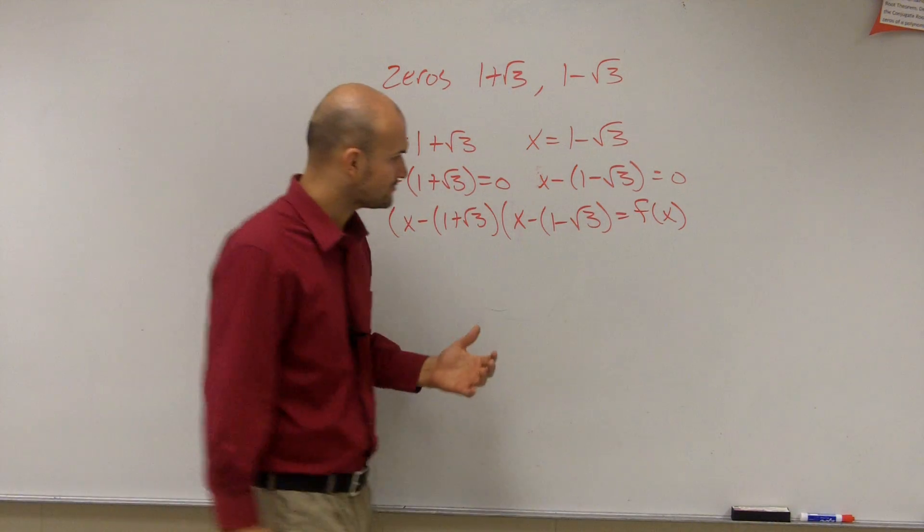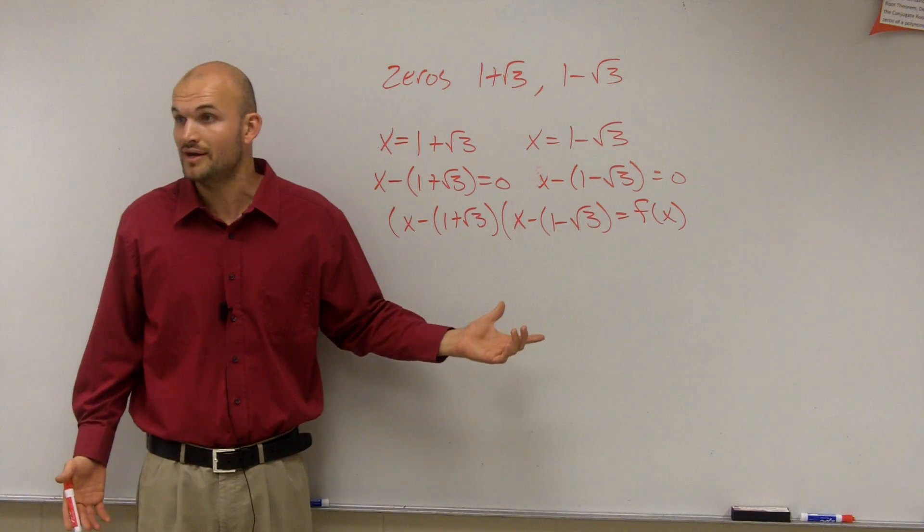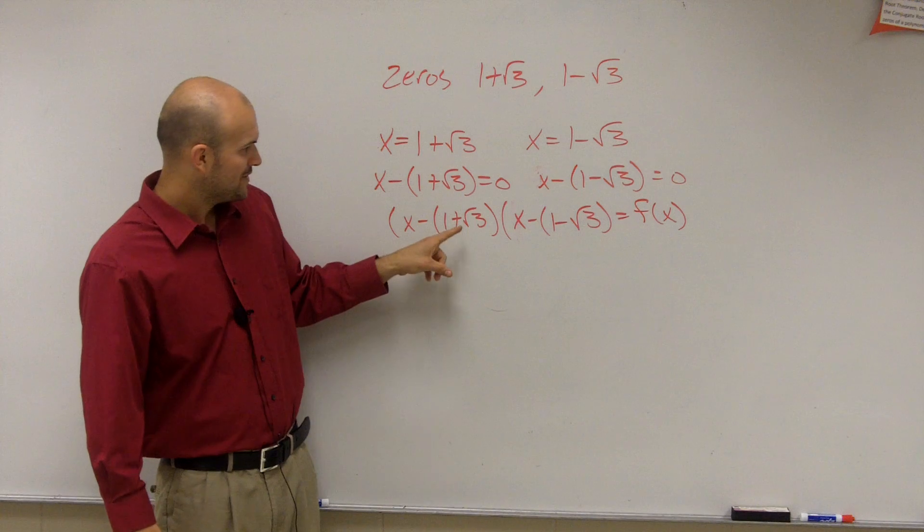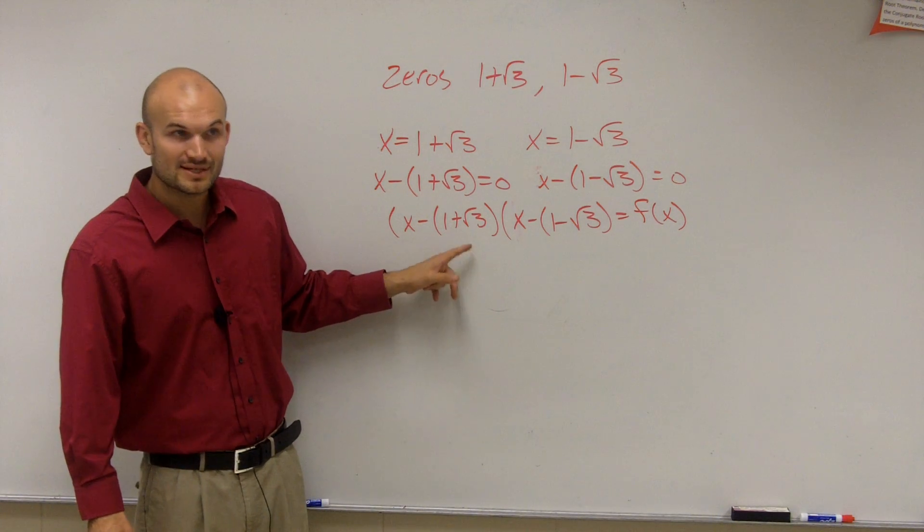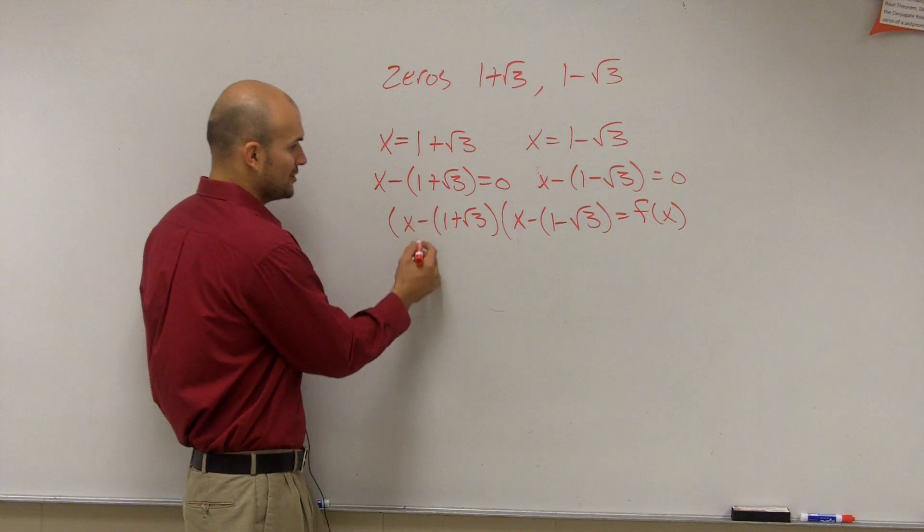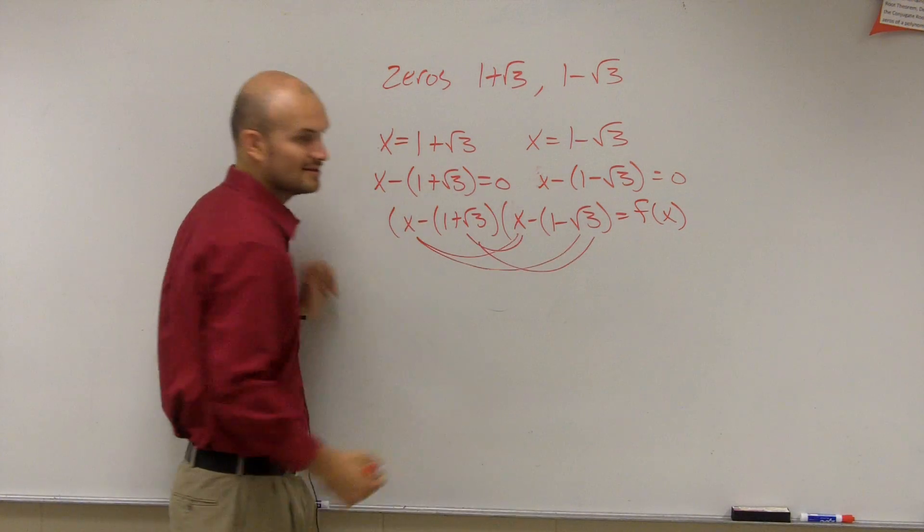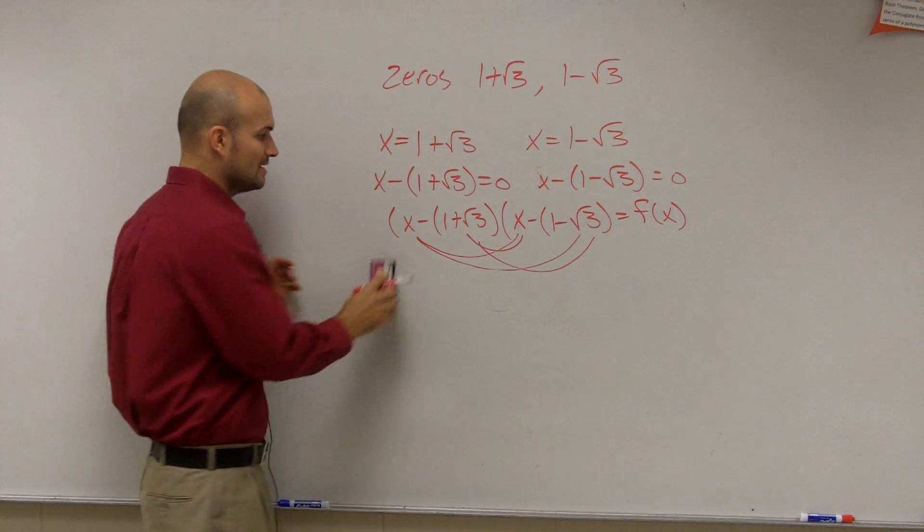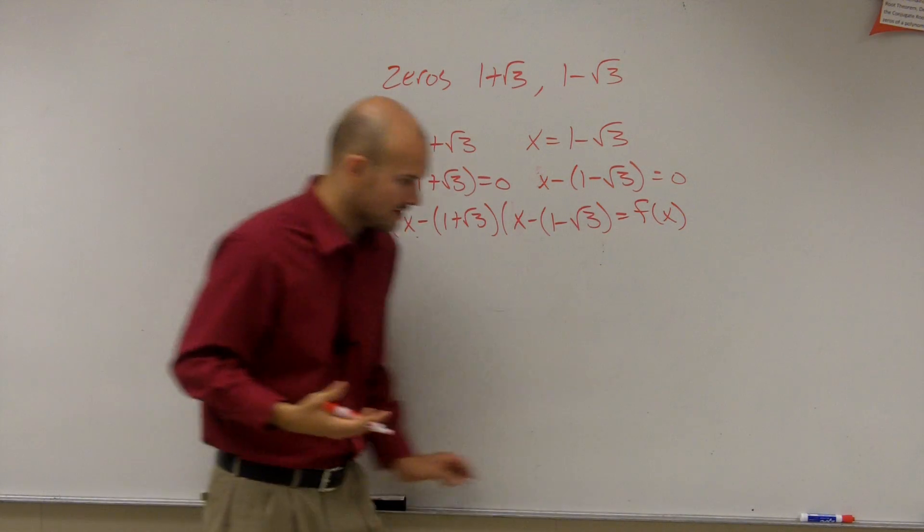So here's where it gets a little confusing. This looks pretty confusing. It's not as easy as your typical foil, right? First, outer, inner, last. This is like your last term is a binomial. So this can get pretty confusing. If you're going to try to do the first, right? Then the outer, inner, last. Try to do foil with this. You could get a little confused. However, if you're very detailed, you can get through it. It's not bad. But I'll show you a little trick.